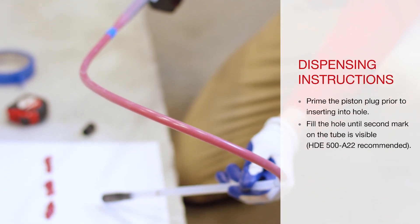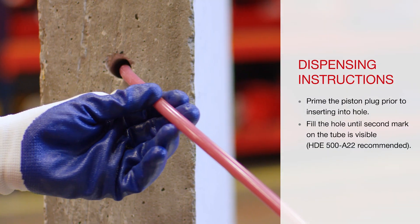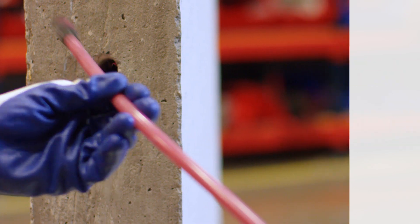Full bonding between the element and the hole wall is extremely important to the strength of the fastening point. The piston plug assists in making sure the hole is completely filled.